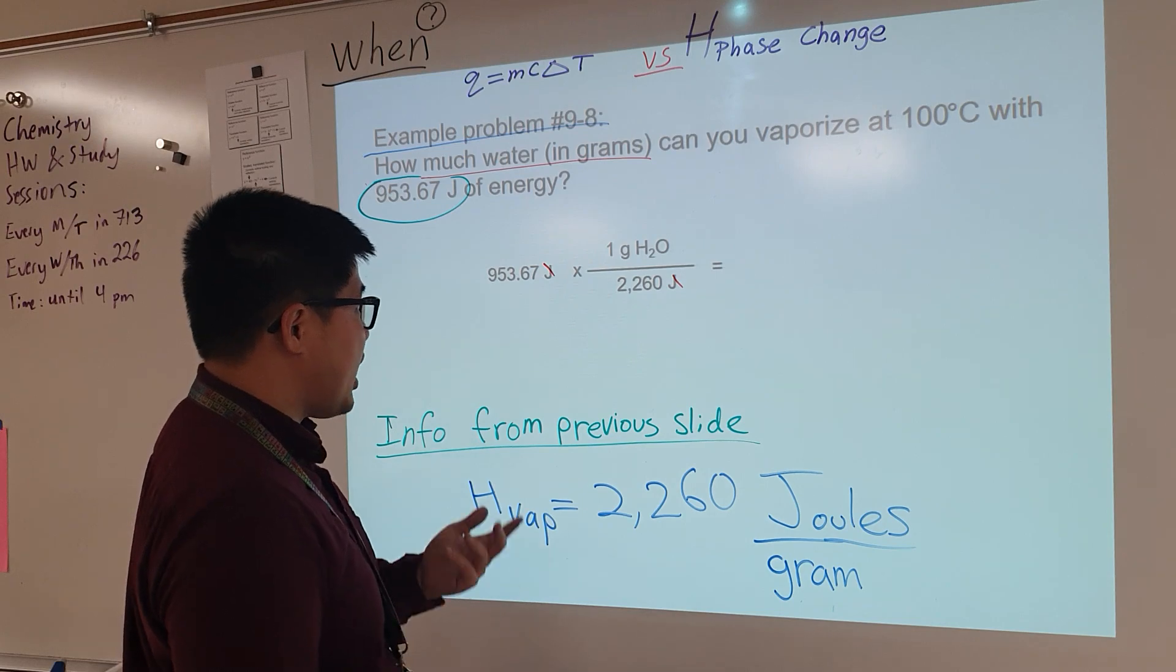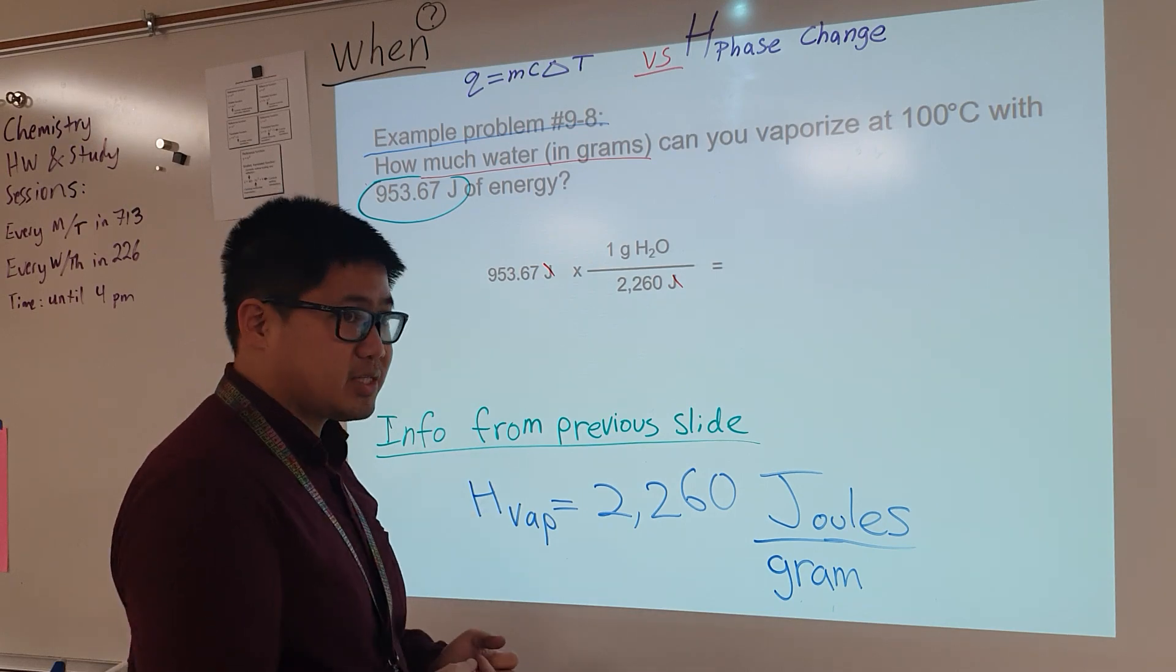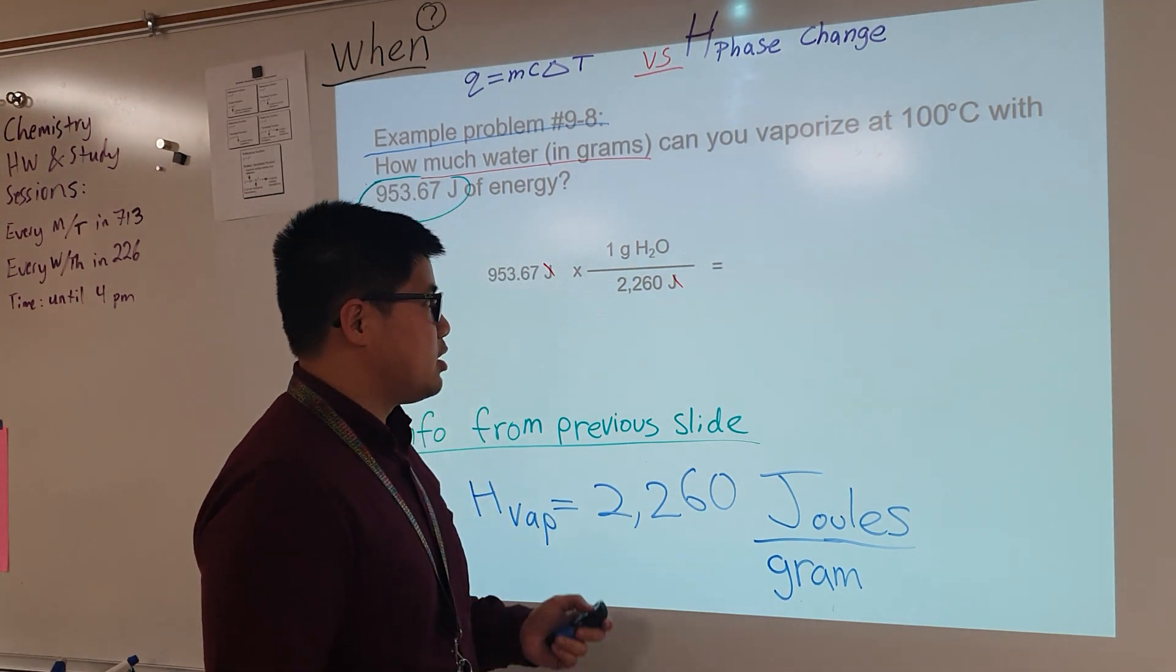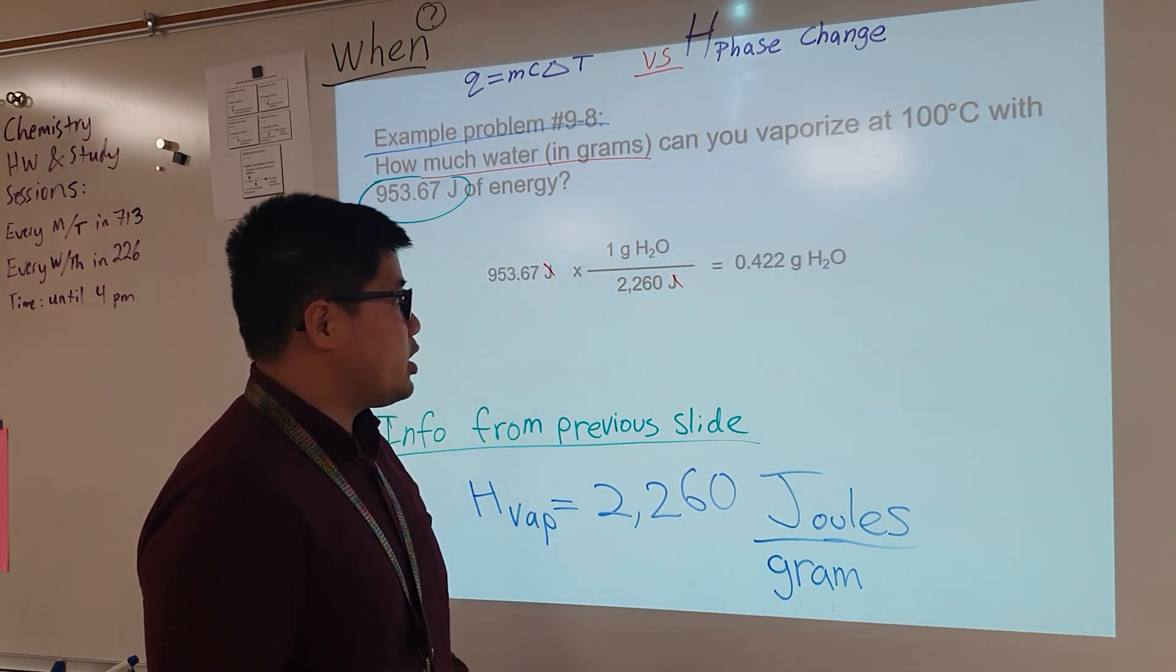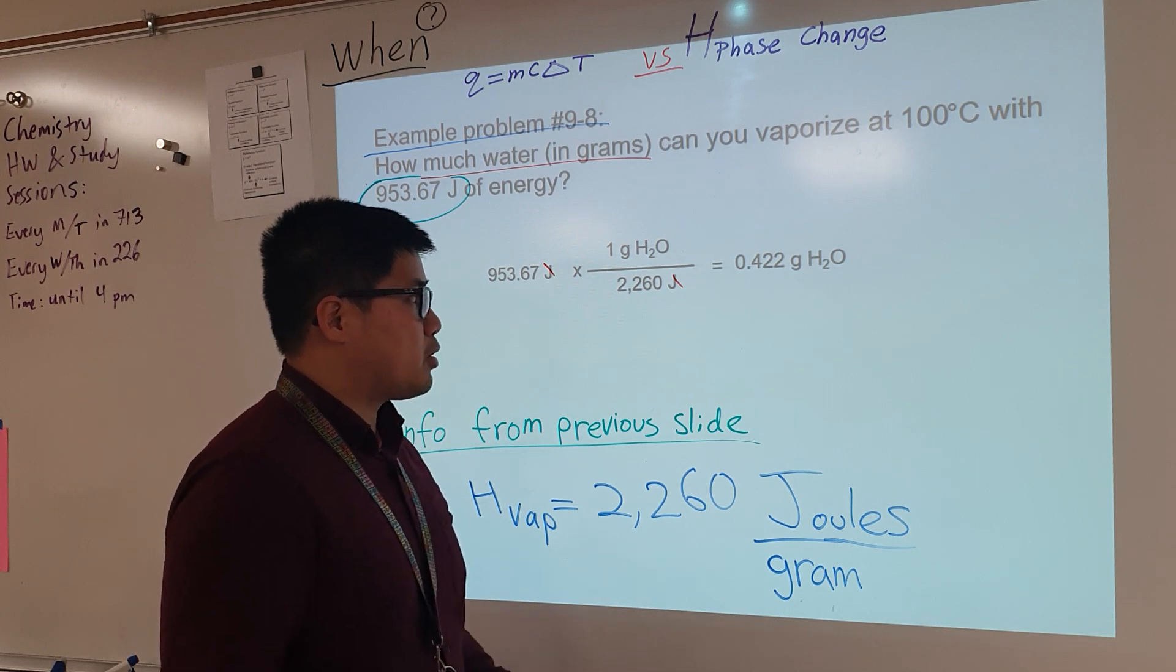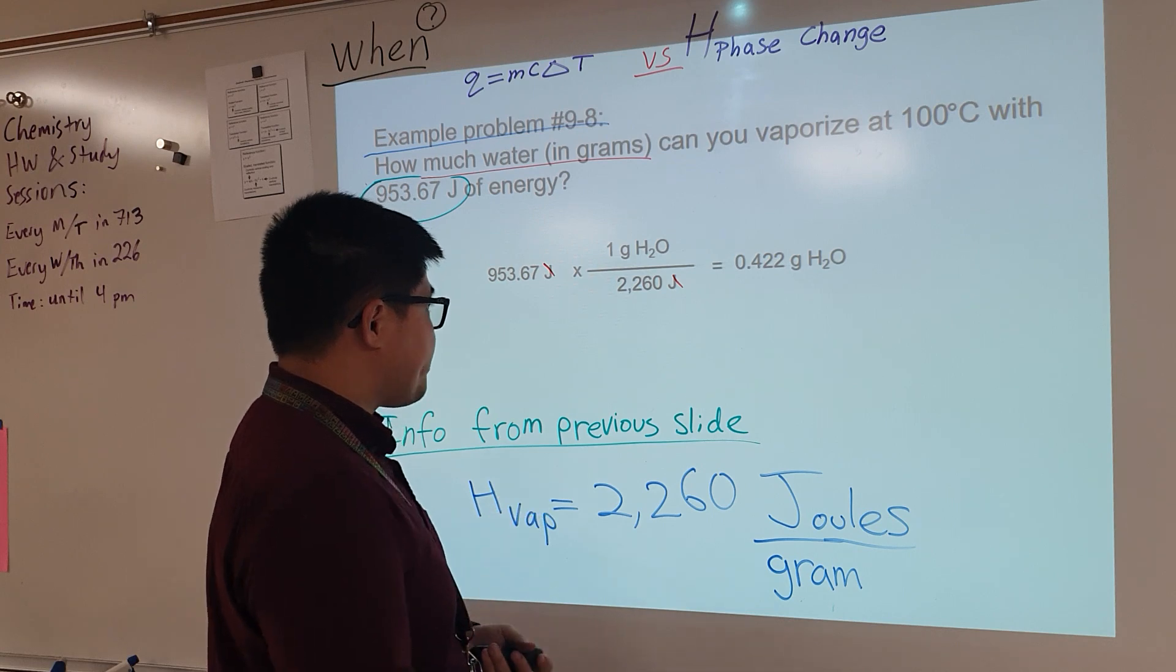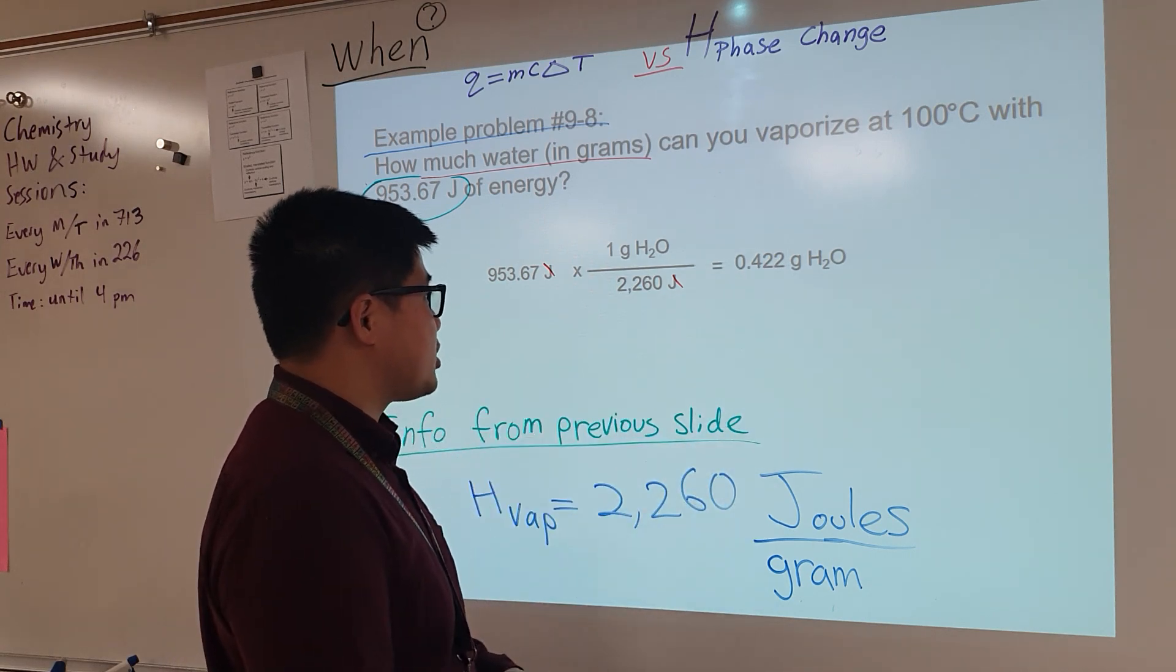And there we feel justified to now use our calculators and crunch in the numbers. With the math in mind, we have 0.422 grams of water. And so with that said, why is it 0.422? It's because of the following.